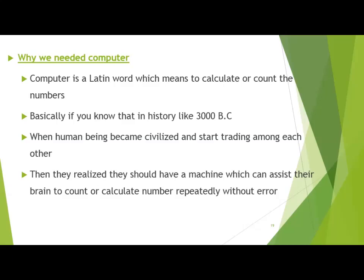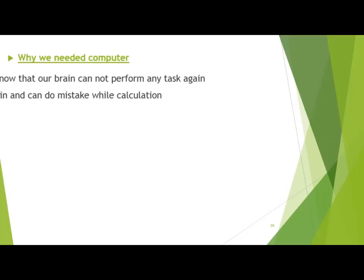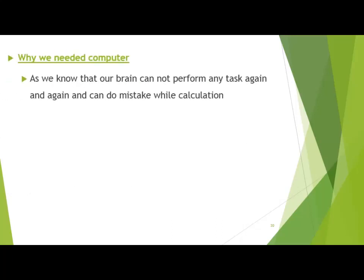They realized they should have a machine which can assist their brain to count or calculate numbers repeatedly without error. The basic reason is that our brain cannot perform even simple calculations repeatedly without making errors, especially when large numbers are involved. So human beings thought they should have a machine to assist their brain in counting numbers.